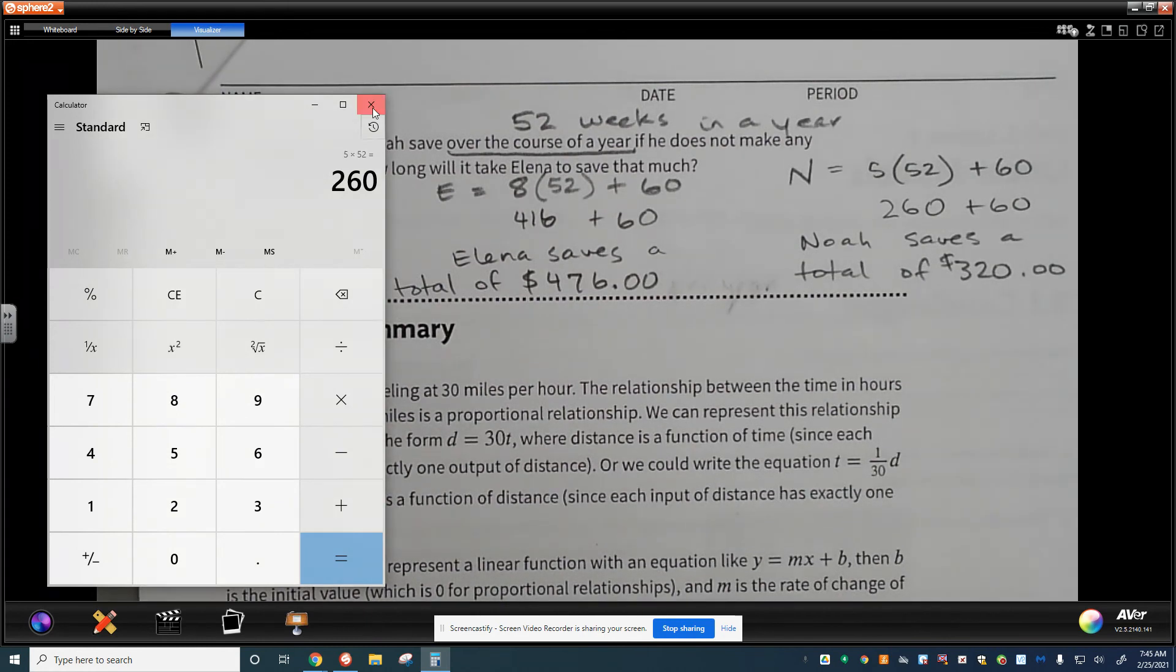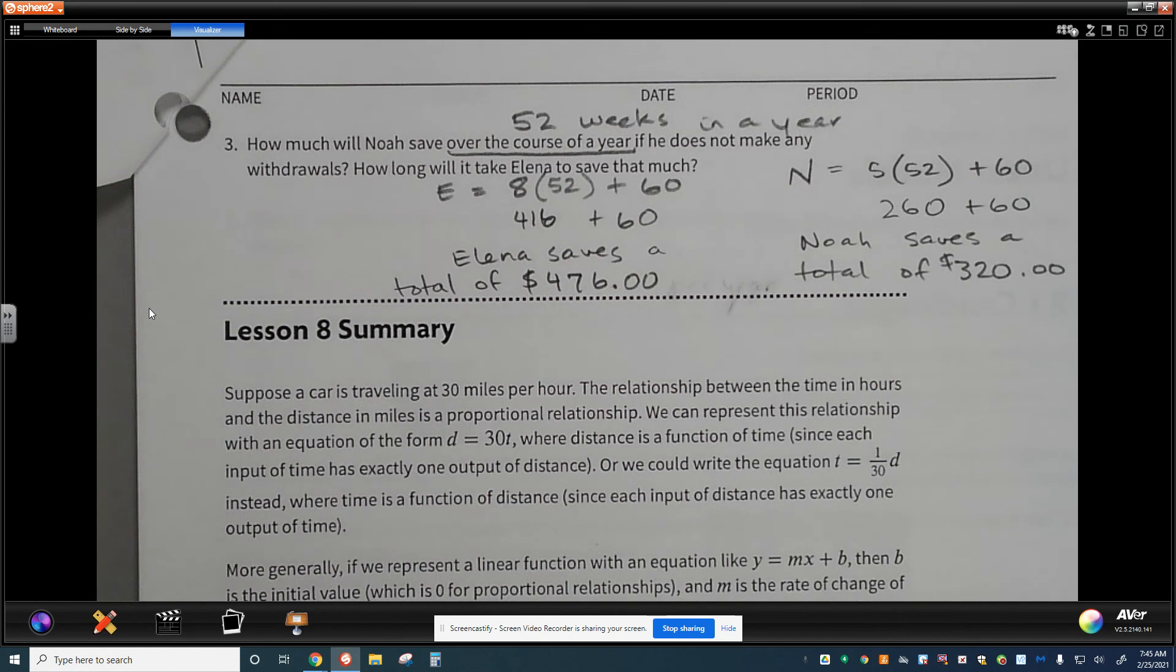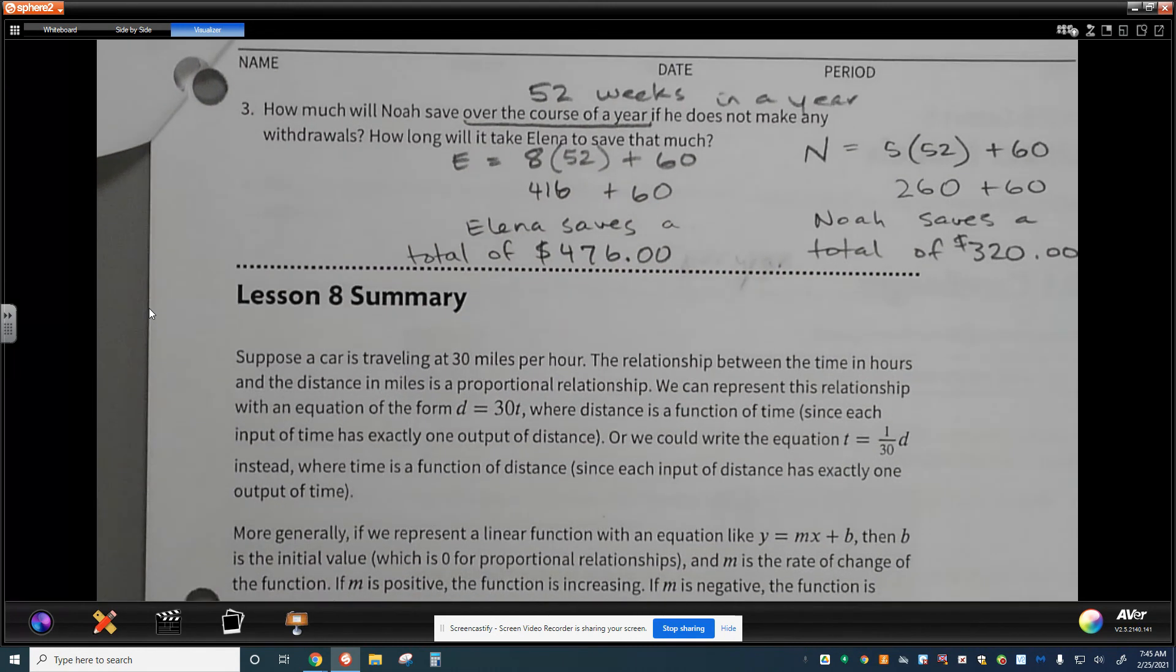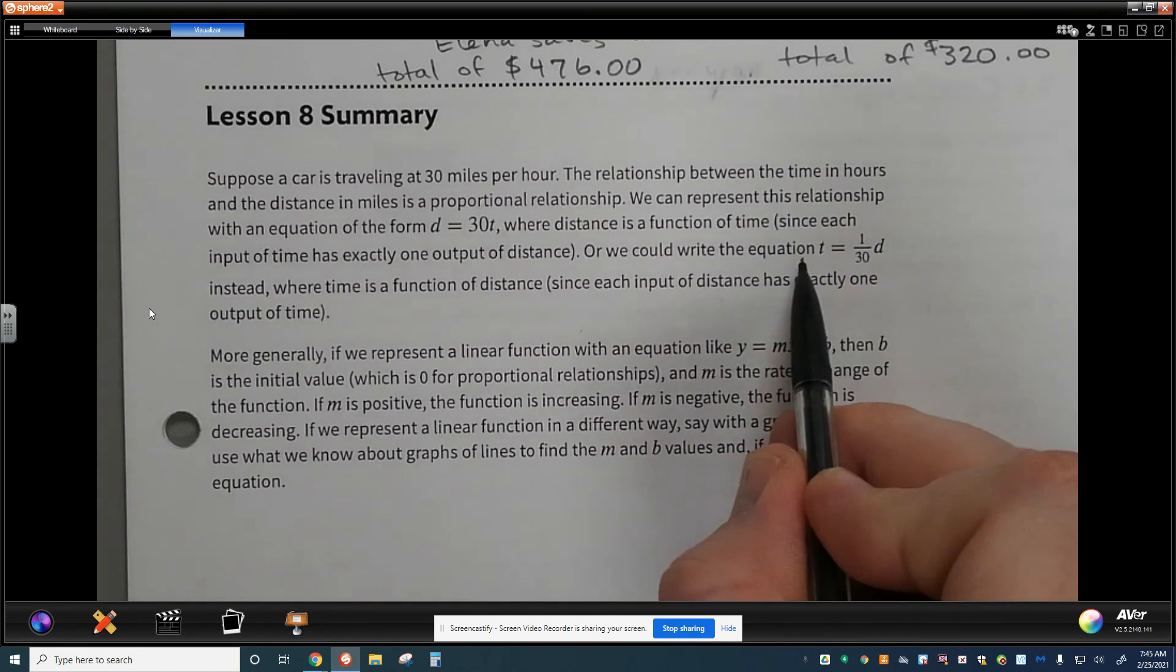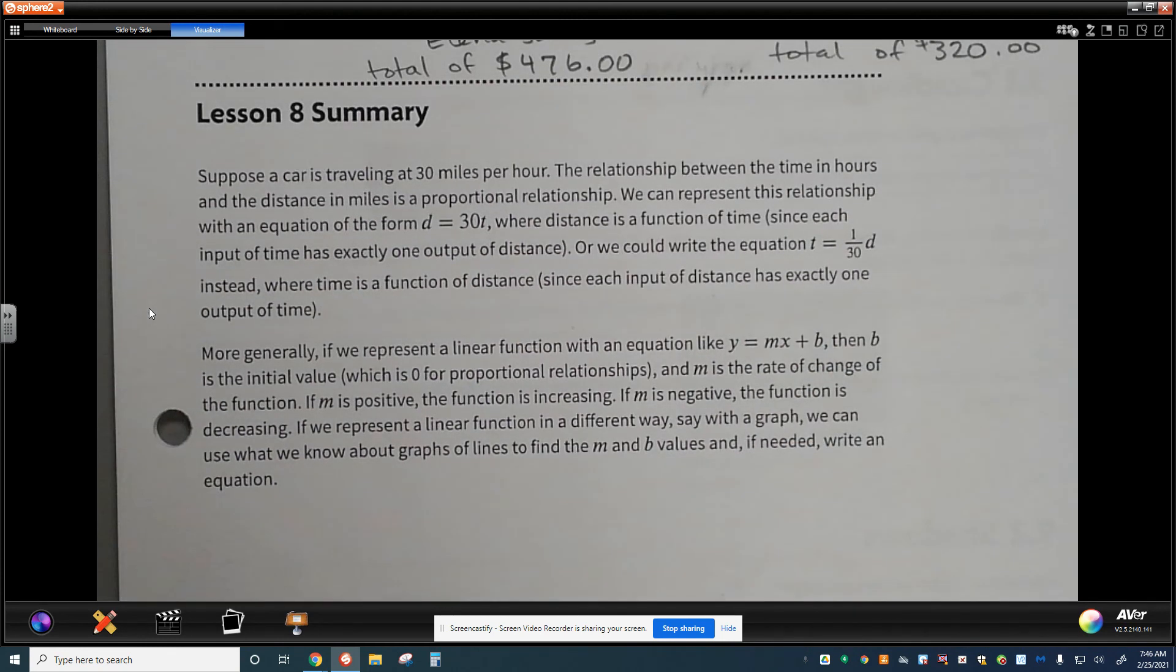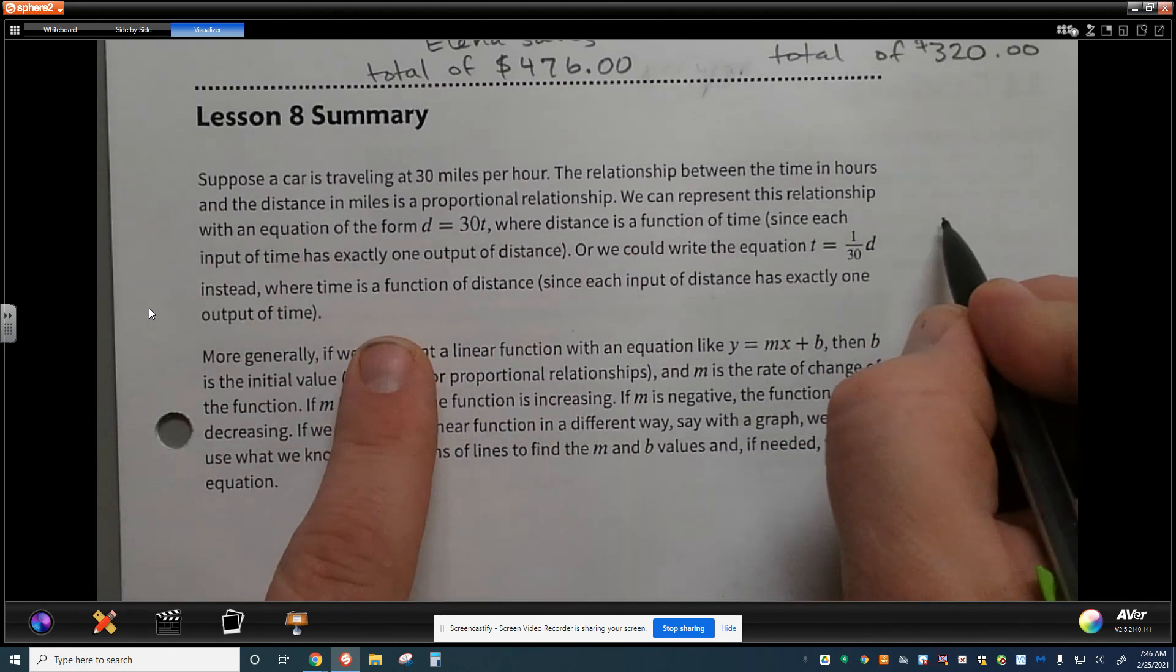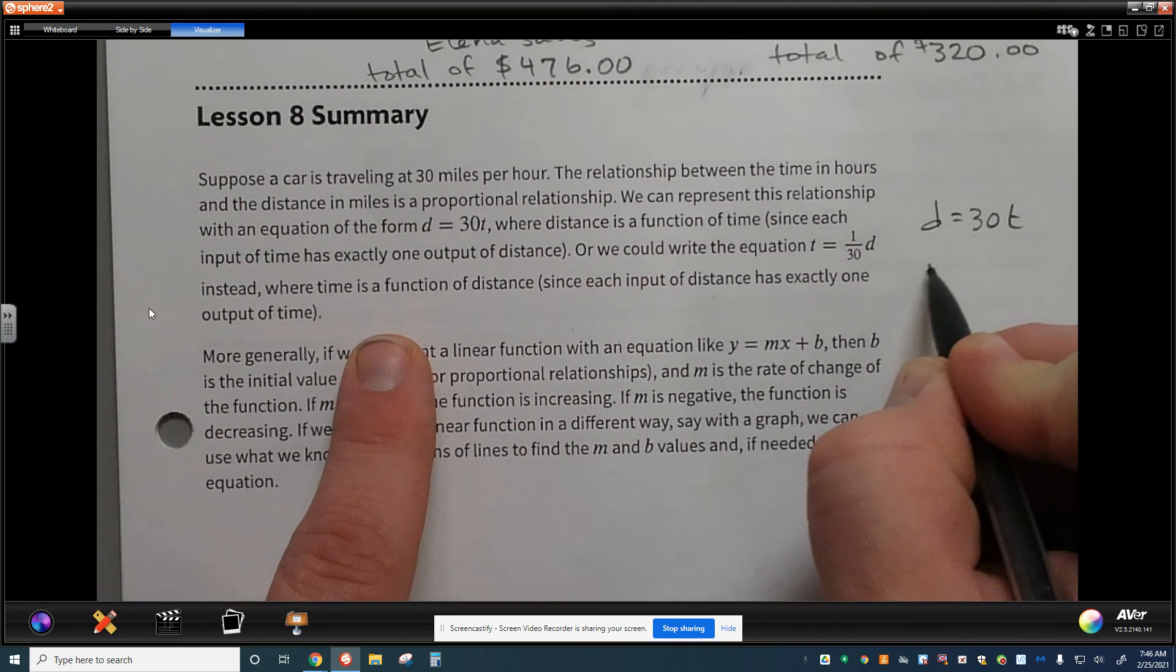So that's our lesson today. A lot of interpreting graphs, a lot of interpreting independent and dependent variables, figuring out how to put things in there, how to write the equation and just overall how to compare the functions to each other. For your summary, suppose that a car is traveling 30 miles per hour the relationship between the time in hours and distance in miles is a proportional relationship. We can represent this relationship with the equation in the form d equals 30 times t where d is a function of time because distance simply depends on the amount of time that you drive or we could write the equation like this as time is equal to 1/30th of distance. Now what you notice with this is that we went from d equals 30 times t to t is equal to 1/30th times d.